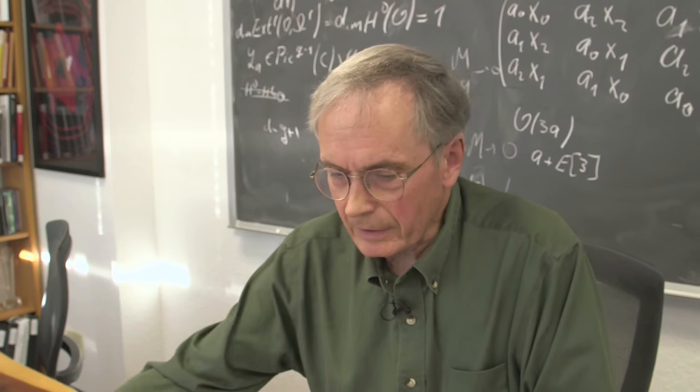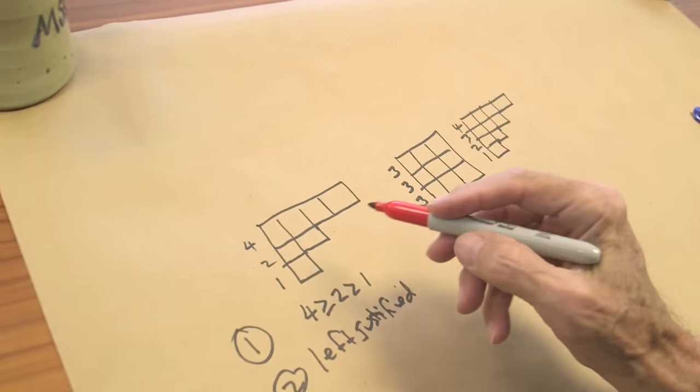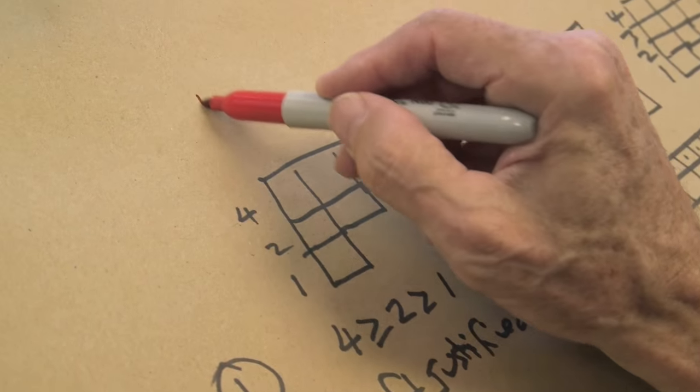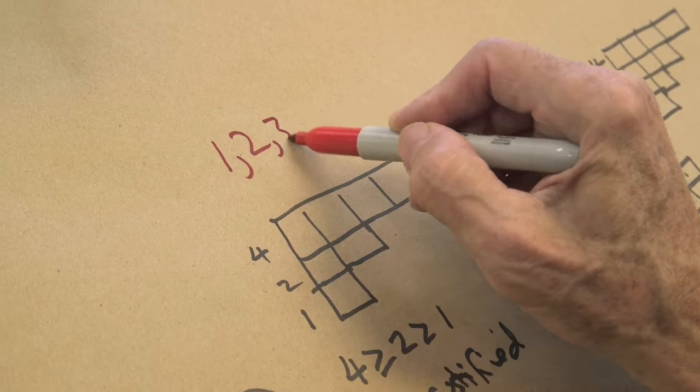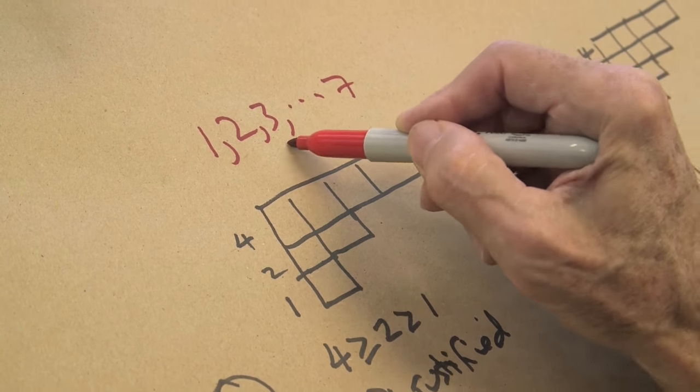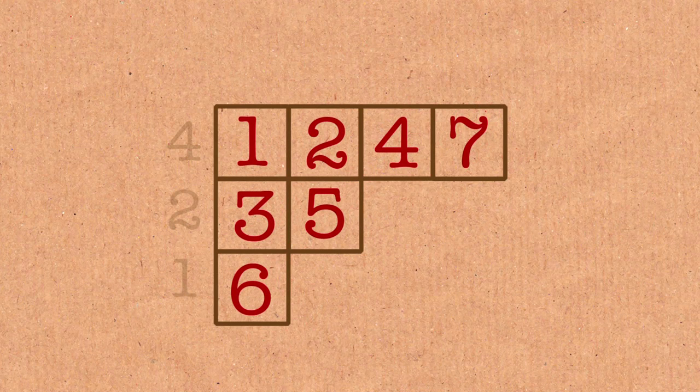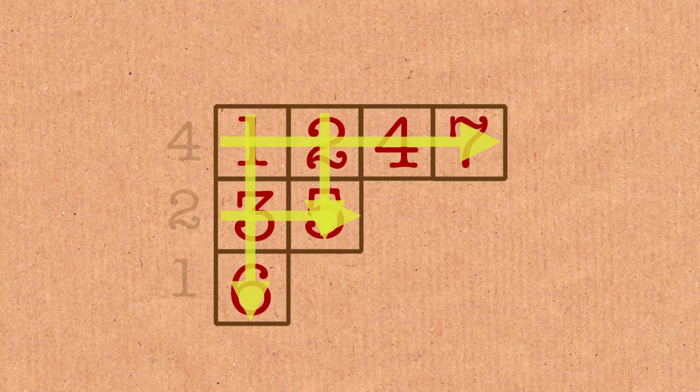We put numbers in them. So maybe I can even do it with these shapes and show you exactly what we do. In this first shape, we have seven boxes all together, so I take the numbers 1 to 7. The rules are that the numbers must be increasing along rows and increasing down columns. So 1-3-6 is increasing, 2-5 is increasing, and so forth. Those are the rules.